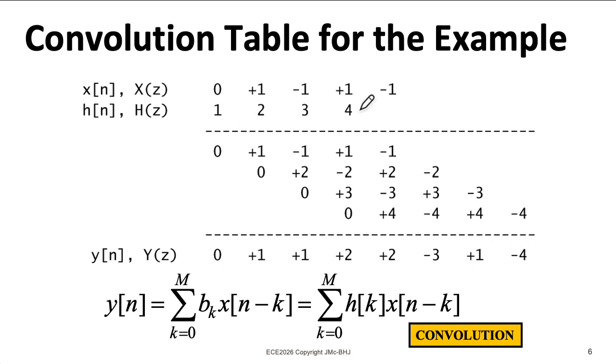And remember, convolution is commutative. So I could take this sequence 1, 2, 3, 4, multiply it by 1, plunk it down, multiply it by minus 1, shift it over by 1, plunk it down, etc., and get the same result.